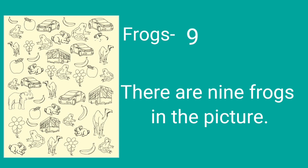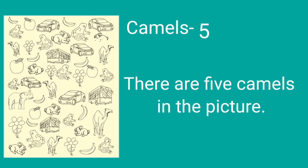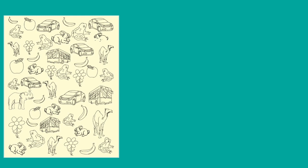ફ્રોગ ને કાઉન્ટ કરો — કેટલા પિક્ચર? ધેર આર નાઈન ફ્રોગ્સ ઇન ધ પિક્ચર. વેરી ગૂડ. કેમર્સ ને કાઉન્ટ કરો — ફોર? ના, ફાઈવ. ધેર આર ફાઈવ કેમર્સ ઇન ધ પિક્ચર. સો ફ્રેન્ડ્સ, હવે બાકી ના જે પિક્ચર બચ્યા છે, તેમના સેન્ટન્સ તમારે જાતે લખવાના છે.